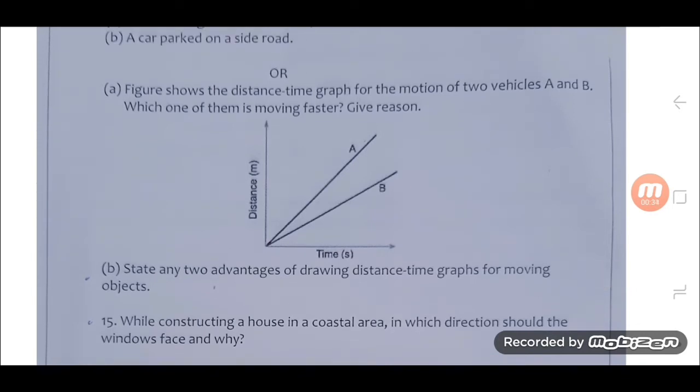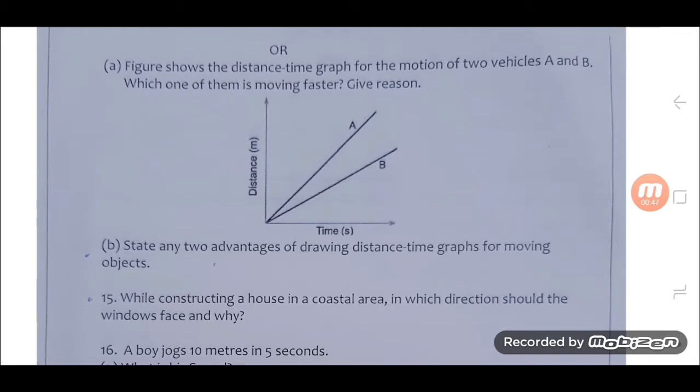Or, figure shows the distance time graph for the motion of two vehicles A and B. Which one of them is moving faster? Give reason. B. State any two advantages of drawing distance time graph for moving objects.